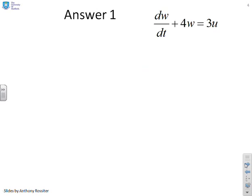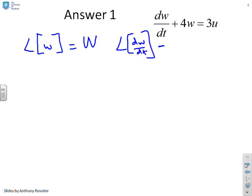The first question then: dw/dt + 4w = 3u. Well, the first thing you do is use your Laplace transform rule, where you know that if Laplace of w equals capital W, then Laplace of dw/dt equals sW. And you'll notice I've ignored the initial condition because we're interested in the transfer function.